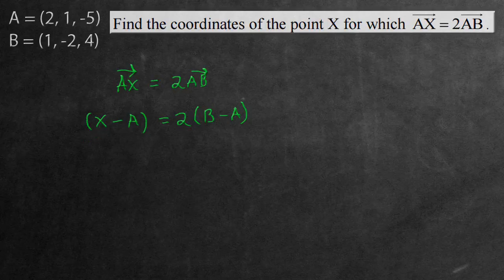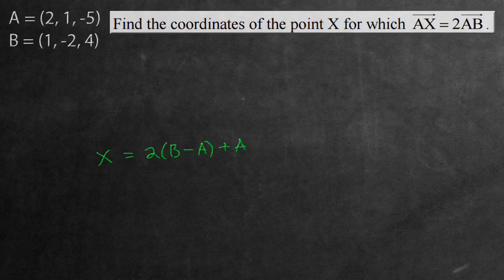So the next thing we're going to be doing is adding A to both sides so we can get X alone. So doing that, we have 2 times (B subtract A) still, but on the end now we have add A. And this is the formula we're going to be using to actually solve the question. It's just a matter of inputting the data now.